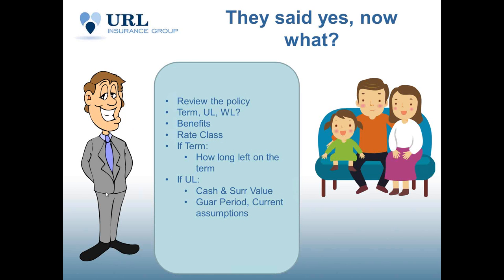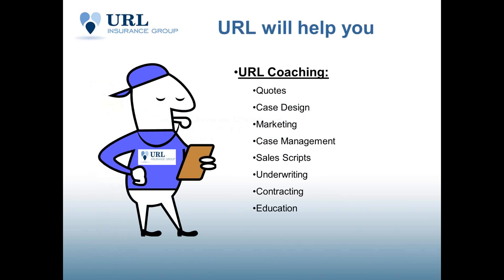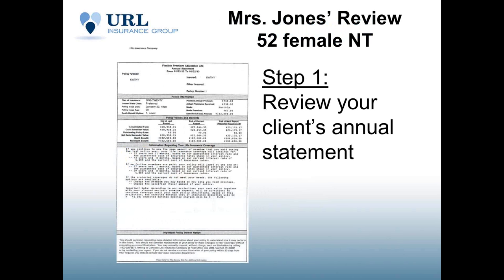If the Joneses say yes, we want to review their policy — see if they have term or UL, what the benefits are, the rate class they were issued at, whether they're smoker or nonsmoker, preferred or standard. If it's term, how much longer is left? If it's UL, what's the cash value and surrender value? If you're not familiar with working with Universal Life, URL can coach you — we can do the case design work. You get us the information and we'll provide the quotes and sales scripts.